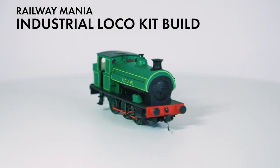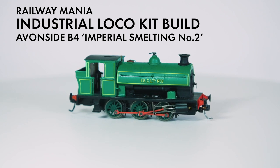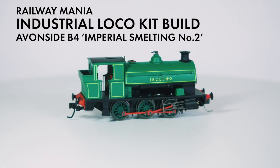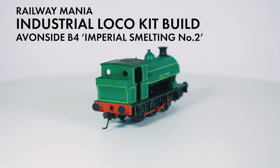Hello and welcome back to Railway Mania. This video is the second part of working on our new Avonside B4 kit, this particular example representing Imperial Smelting Corporation number 2, now preserved on the Avon Valley Railway.